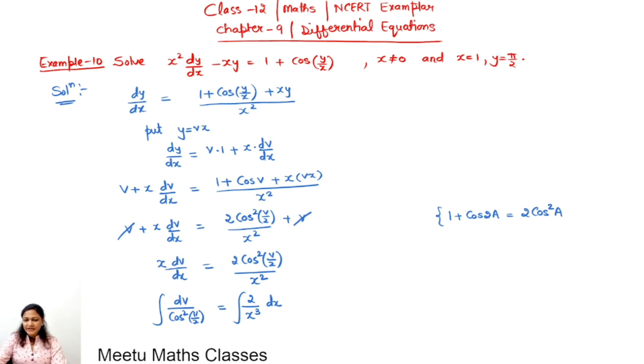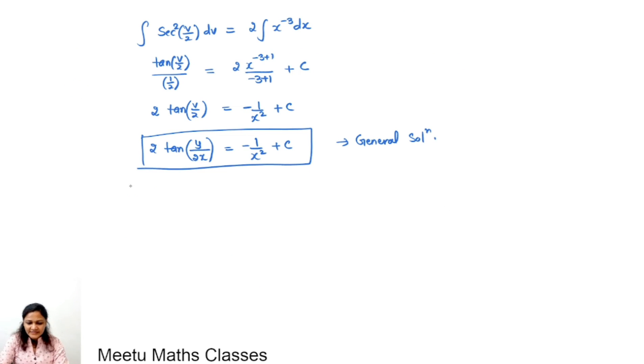Now for the particular solution, substitute the value of x and y. x equals 1, y equals pi by 2. So if we put y equals pi by 2 and x equals 1, this will become pi by 4. And x equals 1, tan of pi by 4 is 1, so 2 into 1 equals minus 1 plus c. C will give you value 3.